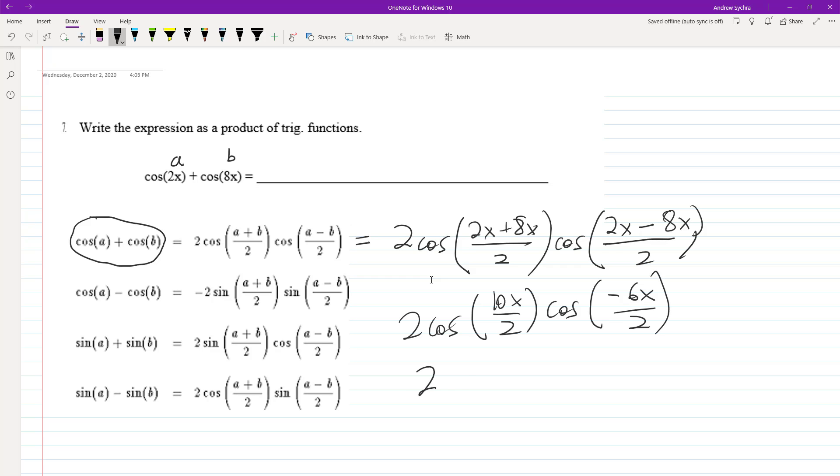So we end up with two cosine of five X and cosine of negative three X. But because cosine is an even function, it's the same thing as just three X.